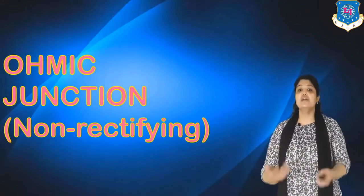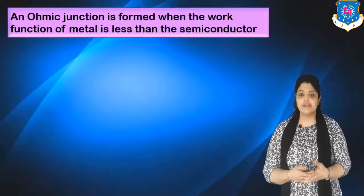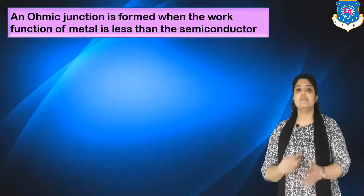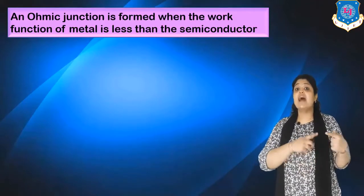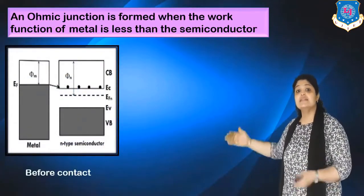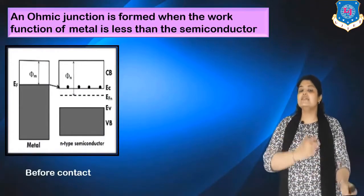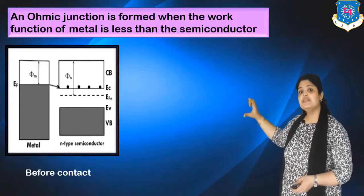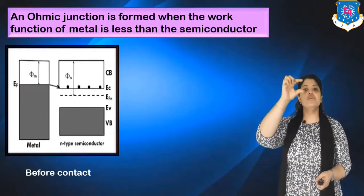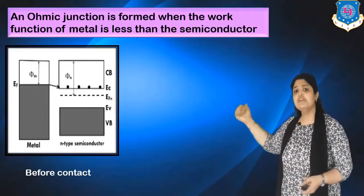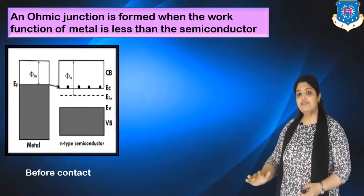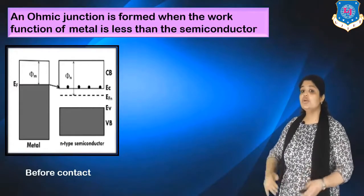The second type of metal semiconductor junction is the ohmic junction, also called a non-rectifying junction. It is formed when the work function of metal is less than that of the semiconductor (φm < φ_semi). Before contact, the energy band diagram is similar to the Schottky case, except the gray colored occupied region is larger, meaning the work function φm is smaller. The n-type semiconductor again has its Fermi level close to the conduction band, with the valence band completely filled by donor-contributed electrons.